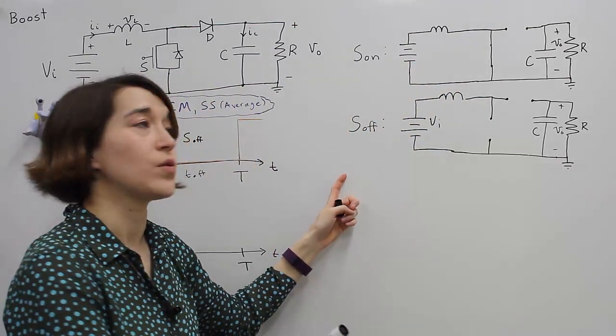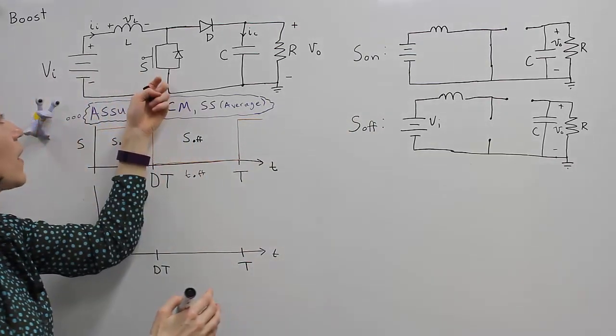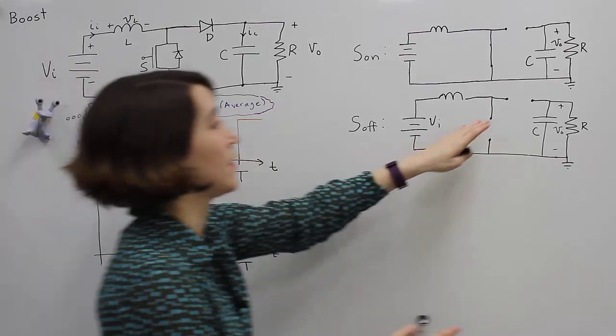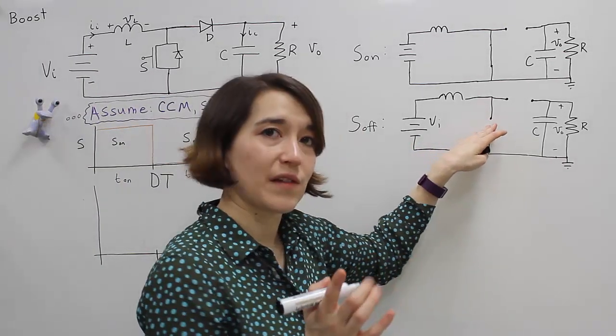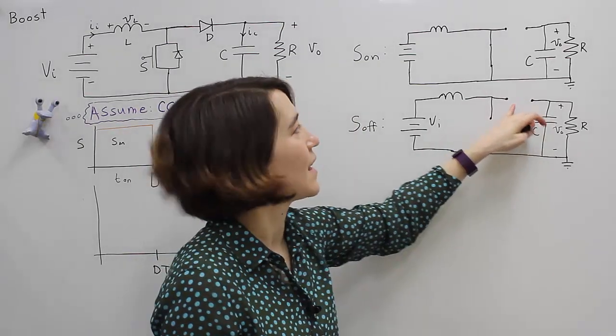Then we can go to S off. And this time we are turning our active switch off. So this is definitely open. So then we have to look at the state of the second, the passive switch, in this case the D.